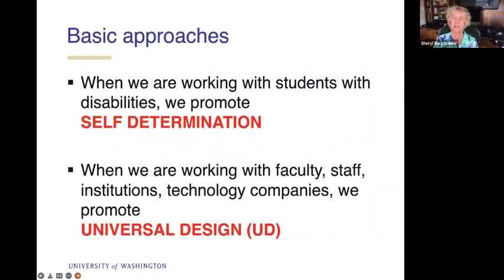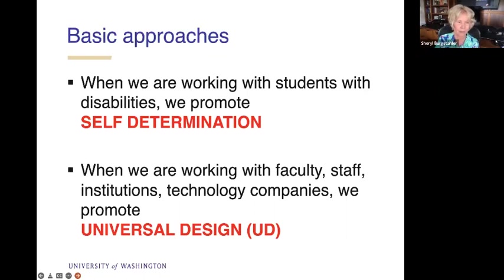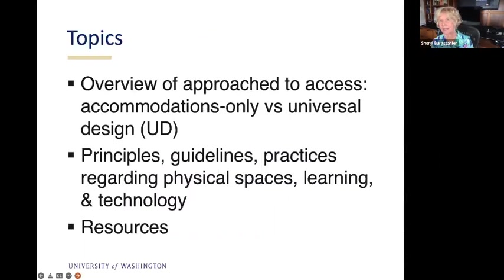Today we're talking about the other part of our approach — when we're working with faculty, staff, institutions, or even technology companies. We're always promoting the universal design or proactive approach using practices that will result in systemic change, so we aren't continually reinventing the wheel. If an accommodation is provided to one student in your online course, maybe you could change your practices next time so everybody would get it in the design of your class or assignment.